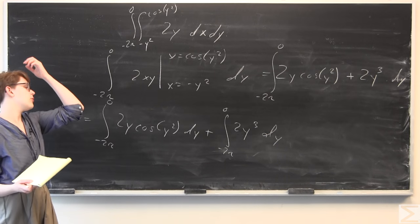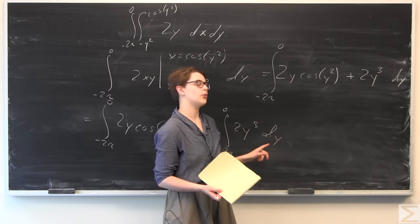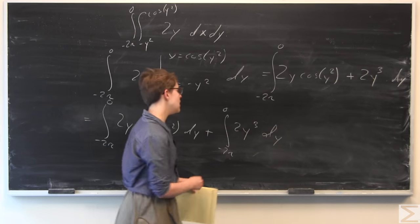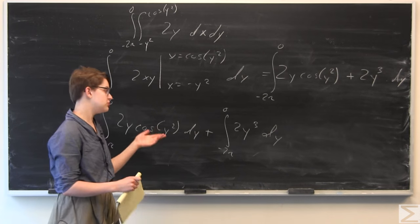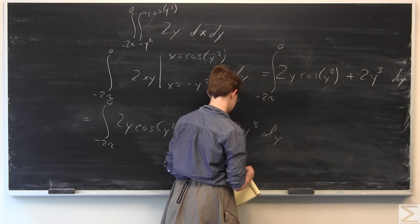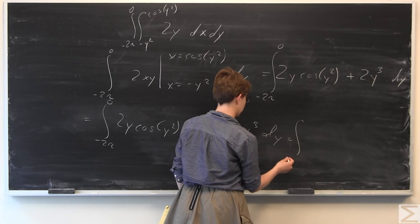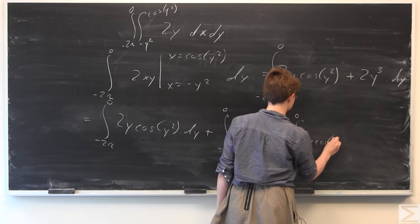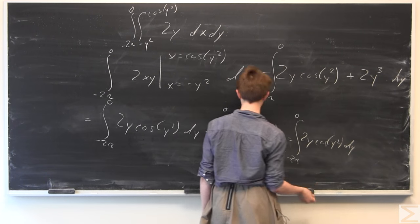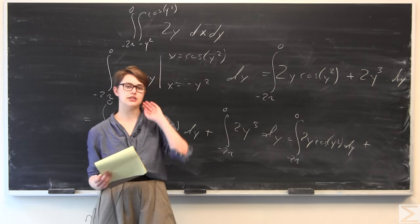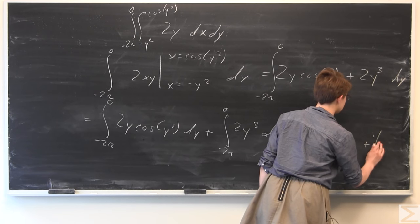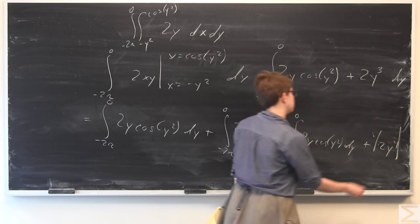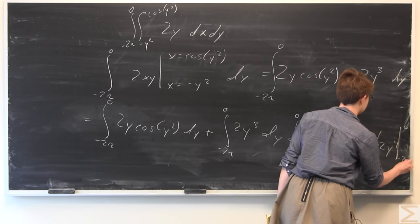We're going to need a u-substitution for the first part, but the second integral — just 2y cubed with respect to y — is fairly straightforward. So we'll do that one first. Copying down the first integral, the integral of 2y cubed with respect to y is ½y to the fourth, evaluated from y equals 0 to y equals negative 2π.